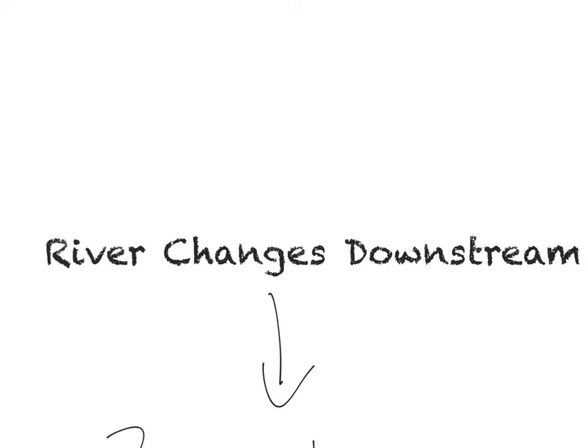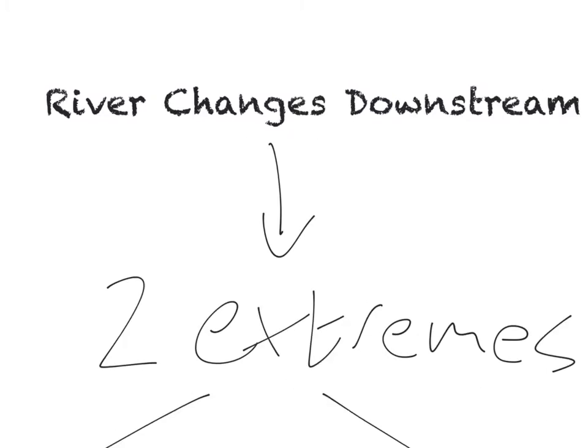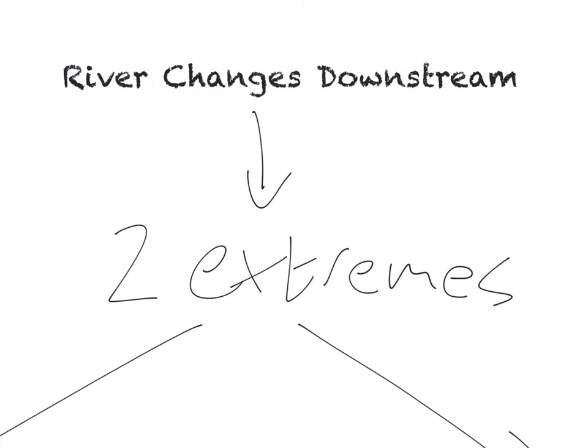This video is designed to talk you through how a river changes downstream and some of the reasons behind those changes. First of all, it's useful for your own understanding to think of the river in terms of two extremes.